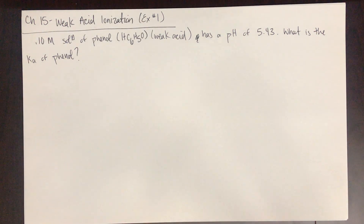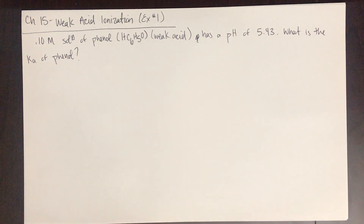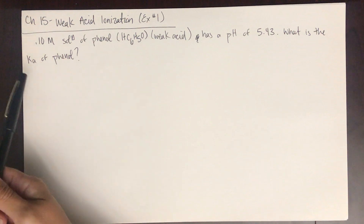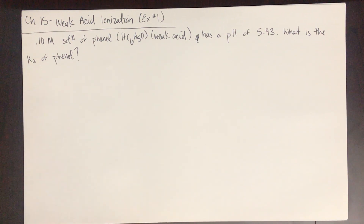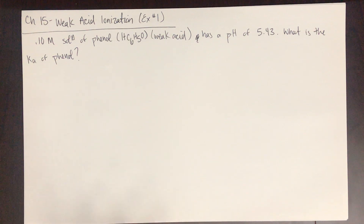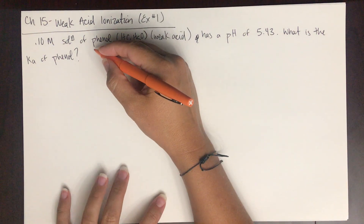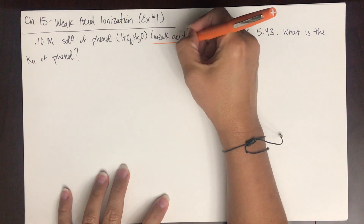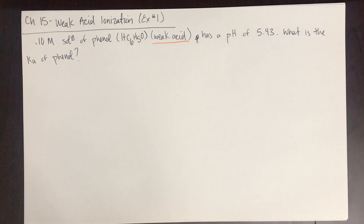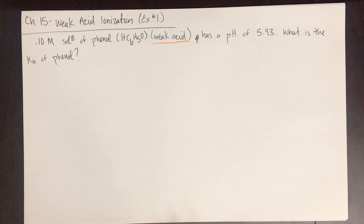This is a weak acid ionization problem, the same as all of the equilibrium problems we've been doing back in chapter 14 when we were solving for Kc. Now we're solving for Ka. It is not important that you know what phenol is, just that you know this is a weak acid. So we're going to write the equation for the equilibrium table as the generic weak acid ionization.